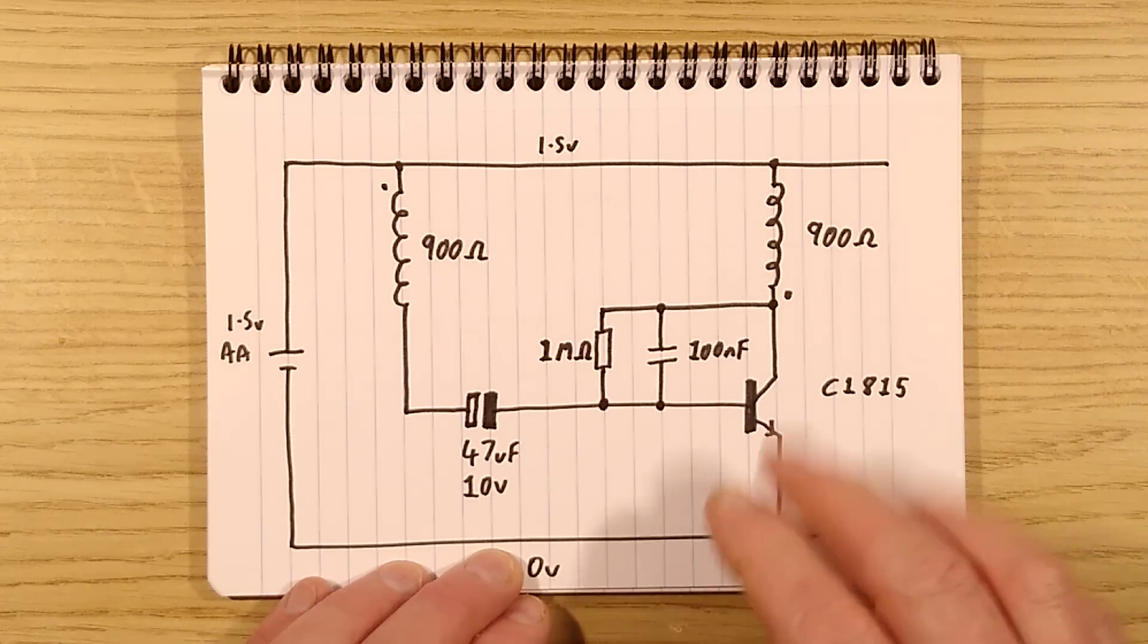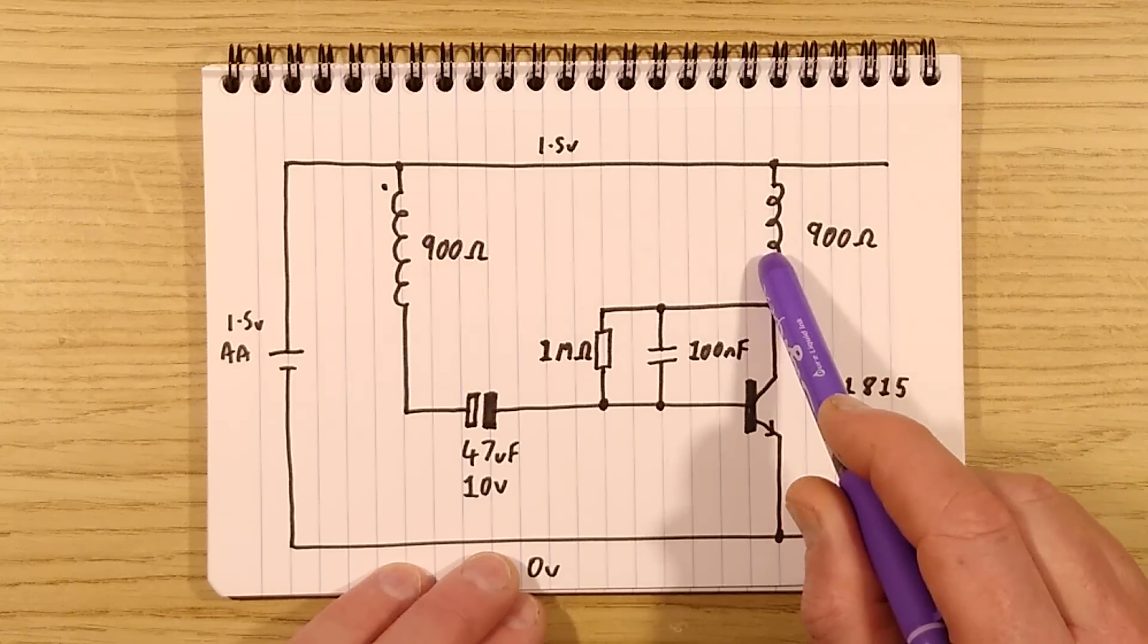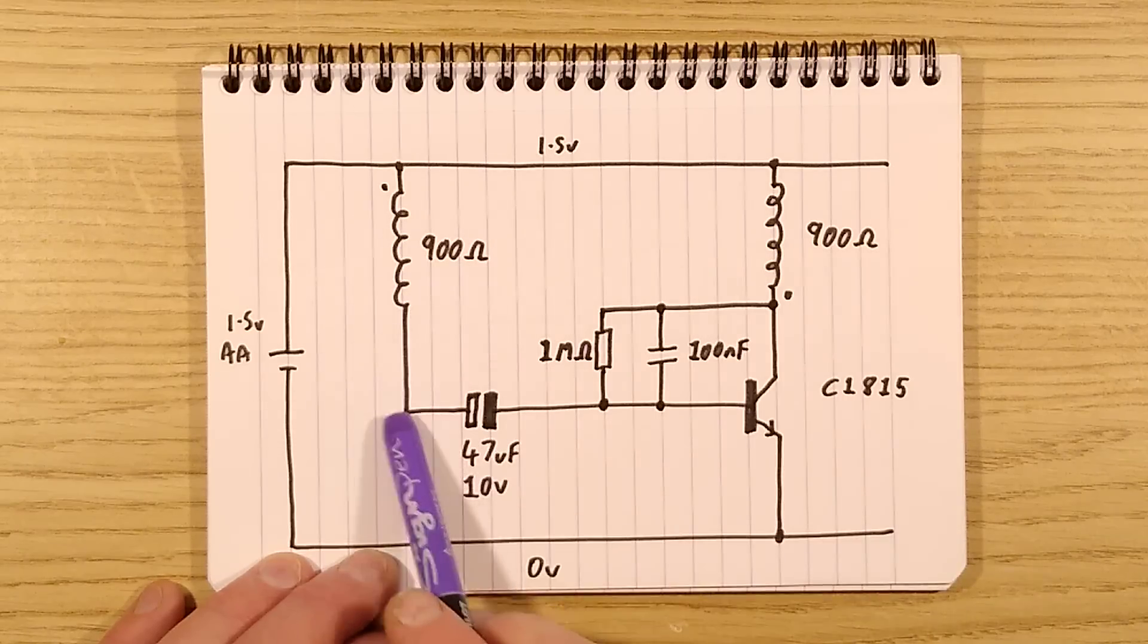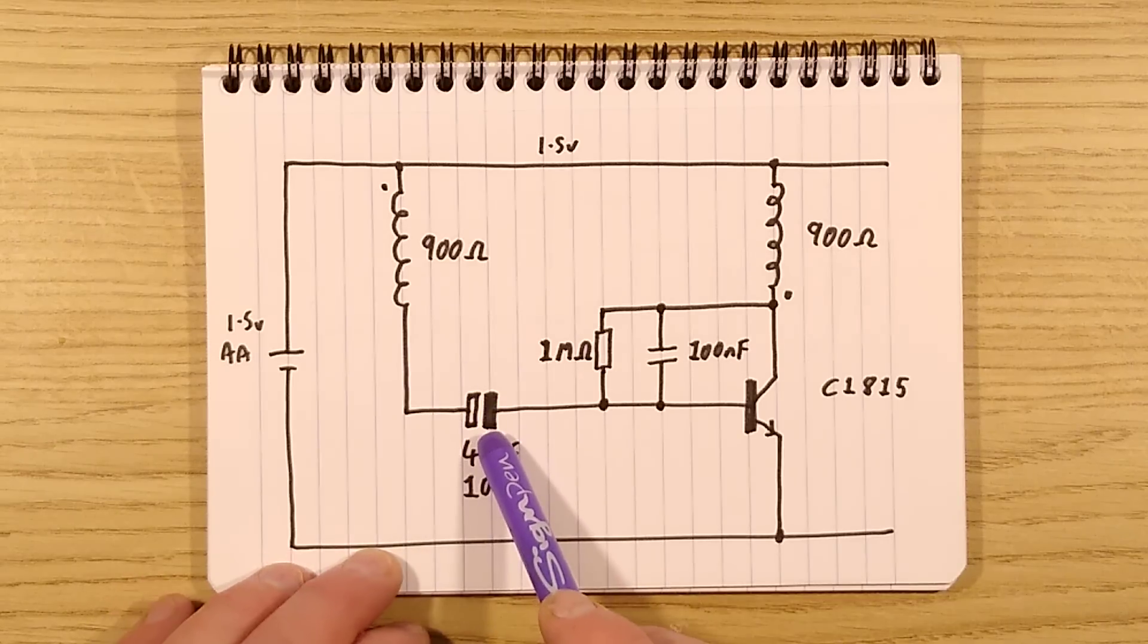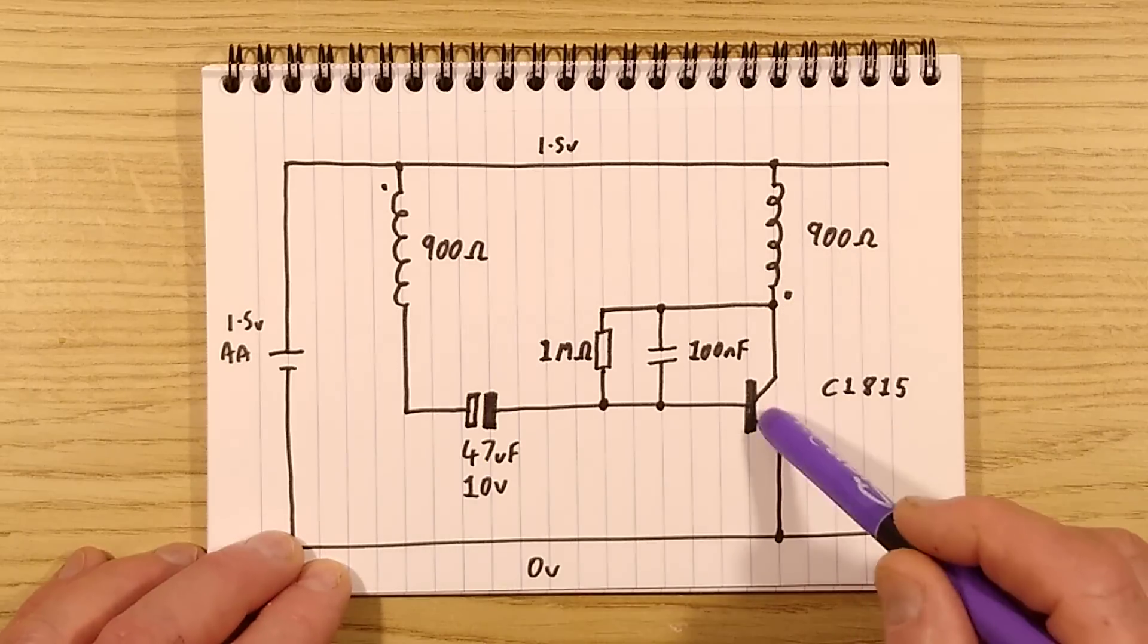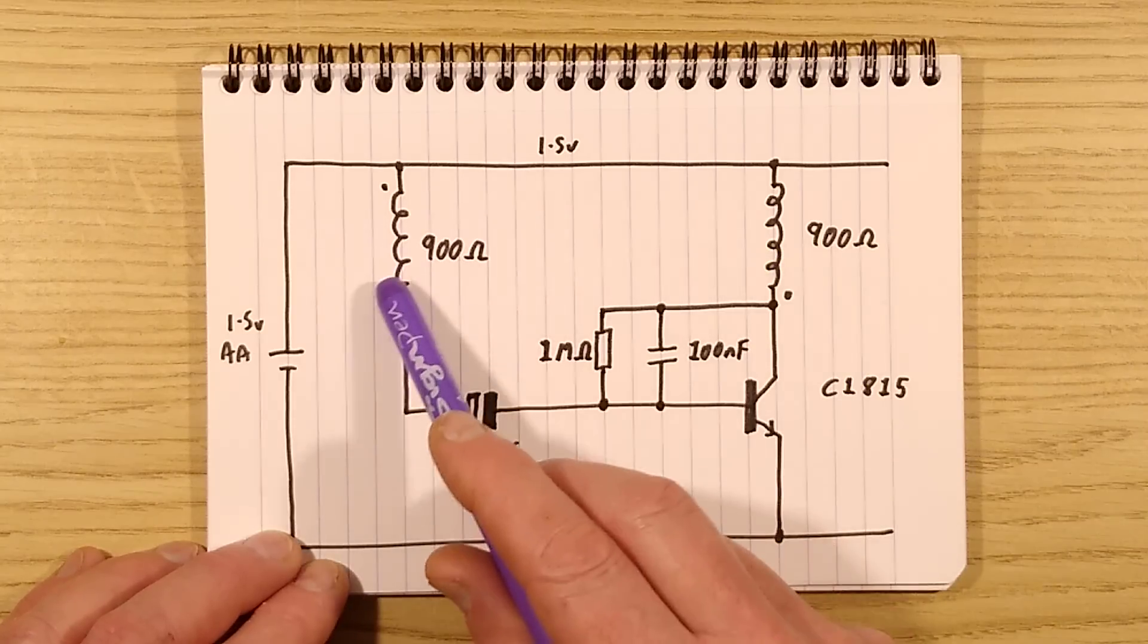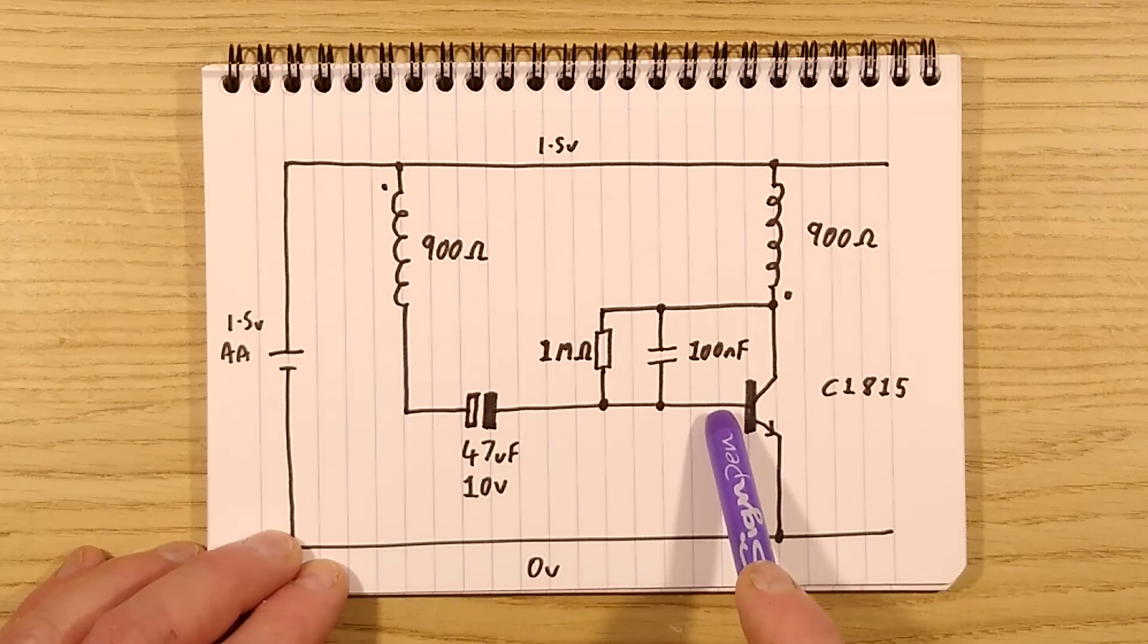That pulse will end under two conditions: either the coil becomes so saturated with magnetic field it can't build up anymore and then it can't couple across any more feedback to this side, or this capacitor will basically charge up fully and it won't be able to pass more current. At that point the transistor starts turning off, the field in this coil collapses, and that causes the same collapsing field here which drives the transistor off decisively.